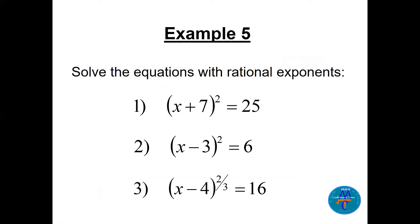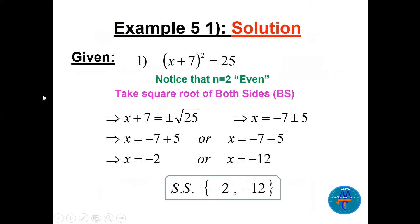Example 1: (x + 7)² = 25. Here n = 2, which is even, so we take the square root of both sides: x + 7 = ±√25 = ±5. Moving 7 to the other side: x = -7 + 5 = -2 or x = -7 - 5 = -12. Solutions: x = -2 and x = -12.